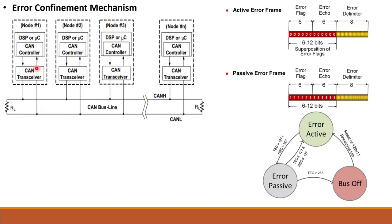For example, if I transmit one frame and it gets corrupted, TEC increments by 8. If I retransmit and it gets corrupted again, TEC increments by 8 again. After 16 consecutive errors — 16 multiplied by 8 equals 128, which exceeds 127 — I enter the Error Passive state. After another 16 errors from the Error Passive state, I will enter the Bus-Off state, meaning 32 consecutive corrupted frames triggers Bus-Off.